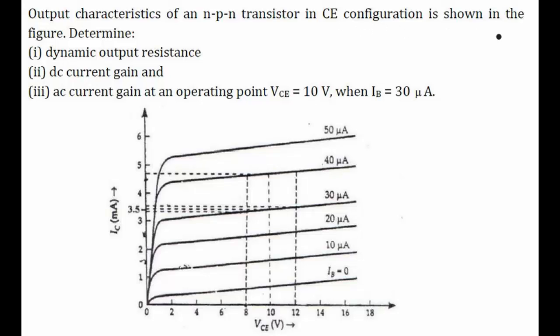We have to determine first the dynamic output resistance, second the DC current gain, and third the AC current gain at an operating point VCE equals 10 volts and base current is 30 microamperes. So let's solve the first part, that is dynamic output resistance.